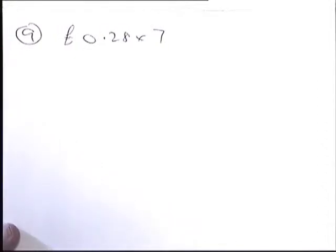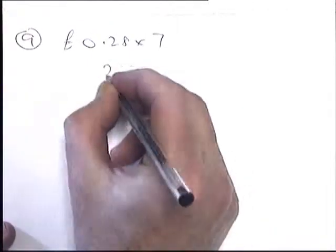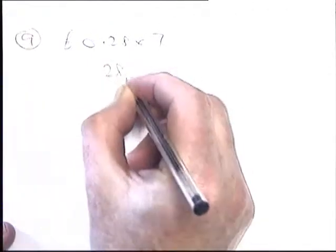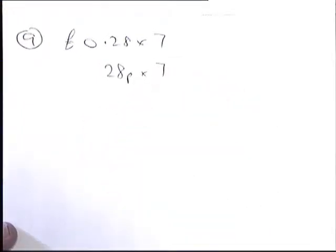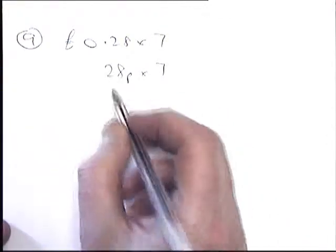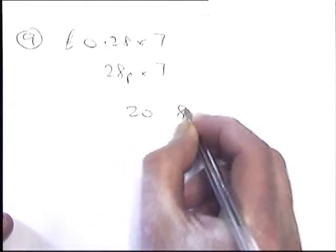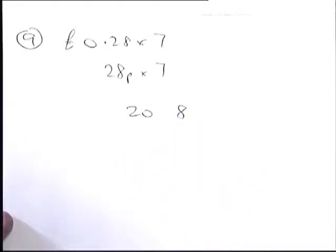Question 9 was £0.28 times 7, which is the same as 28p times 7 if you get rid of the decimal point — some people find it easier. We're going to split this 28 up into 20 and 8, after all that's what 28 is: 20 and 8.